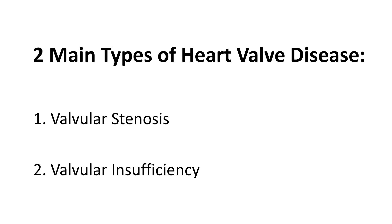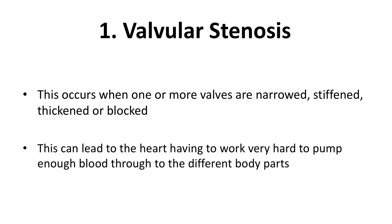There are two main types of heart valve disease. One, valvular stenosis, and two, valvular insufficiency. Valvular stenosis occurs when one or more valves are narrowed, stiffened, thickened, or blocked. This can lead to the heart having to work very hard to pump enough blood through to the different body parts. All four of the heart valves can develop stenosis.